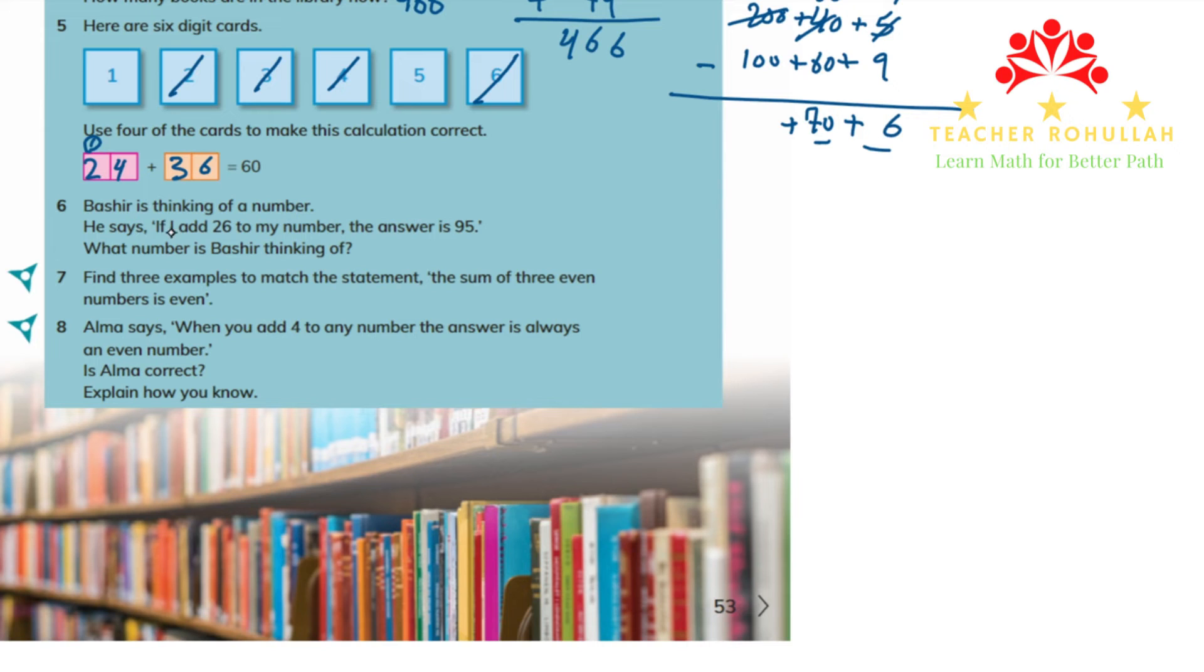In question 6, Bashir is thinking of a number. He says, if I add 26 to my number, the answer is 95. What number is Bashir thinking of? Bashir says, I have a number. If I add 26 to it, the answer is 95. To find what number Bashir has had, we can subtract 26 from 95. So we can write 95 minus 26. 6 cannot be subtracted from 5, we borrow one from 9. This becomes 8 and this one becomes 15. 15 minus 6 is equal to 9. 8 minus 2 is equal to 6. So the number that Bashir has had is 69. 69 plus 26 is equal to 95.